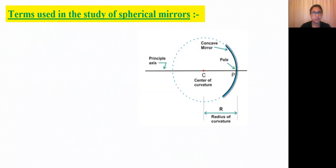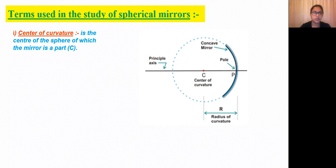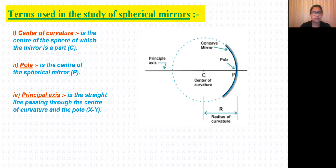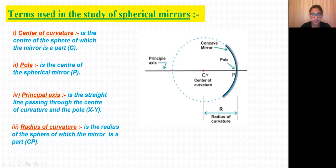There are a few important parameters needed when studying spherical mirrors. The center of curvature is the center of the sphere of which the mirror is a part, represented by the letter C. The pole is the center or midpoint of the spherical mirror, for either concave or convex. The principal axis is an imaginary line passing through the center of curvature and the pole. The radius of curvature is the radius of the sphere, or the distance between the center of curvature and the pole, represented by capital letter R.